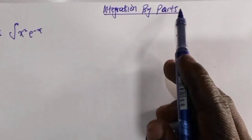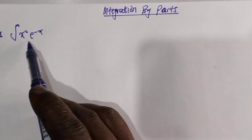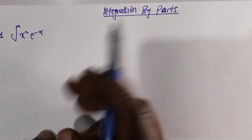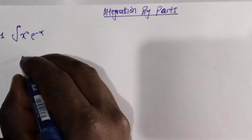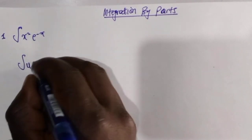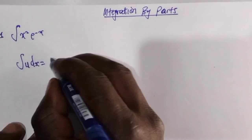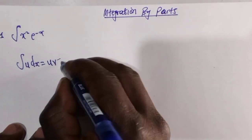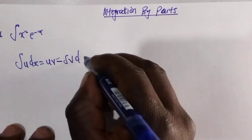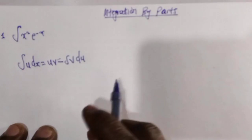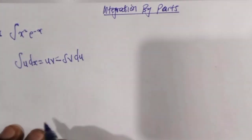Hello guys, today we are looking at integration by parts. We have the question: the integral of x squared e to the power minus x. First of all, we have to write the formula. The formula is denoted by the integral of u dv, which equals u times v minus the integral of v du. This is the formula we are going to use when solving this question. Now let's get started.